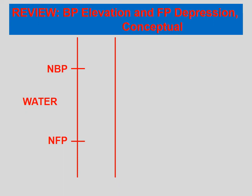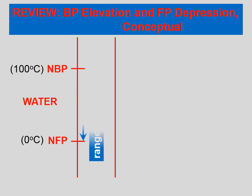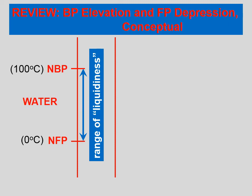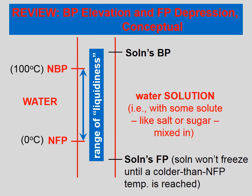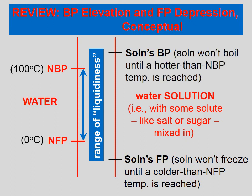Let's review this conceptual treatment of boiling point elevation and freezing point depression. On the left we have a temperature scale. For pure water, the normal freezing point is 0°C and the normal boiling point is 100°C — water is a liquid between those temperatures. If we change that water into a solution by adding a solute like salt or sugar, the freezing point drops below 0°C and the boiling point rises above 100°C. The solution won't freeze until a temperature colder than the normal freezing point is reached, and it won't boil until a temperature hotter than the normal boiling point is reached.